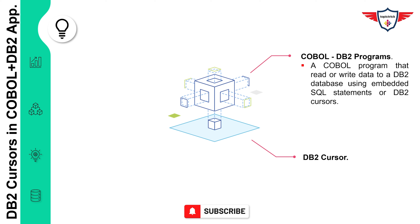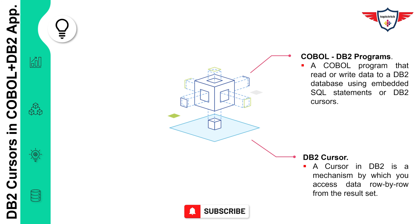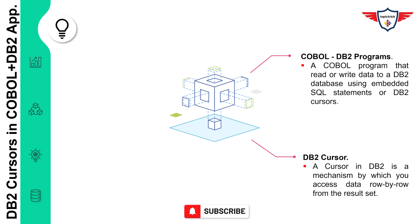What is a DB2 cursor? In layman's terms, a DB2 cursor is a mechanism by which you access data row by row from the result set. This result set is created once the embedded SQL statement is executed, which is specified when you define your cursor. The cursor keeps track of records in the result set, and with it you can read, update, or delete any row from the table.